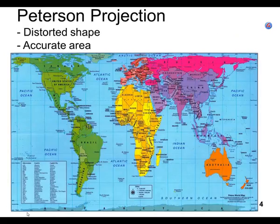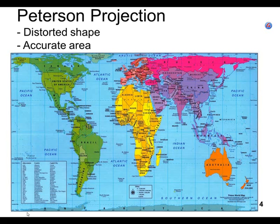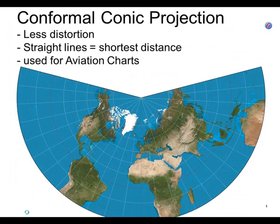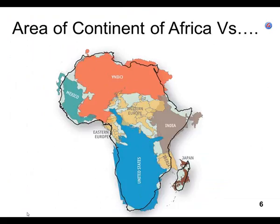Then I looked at the Peterson projection. The countries near the North Pole and near the South Pole are distorted, but the size — the area — is correct. So if you look at Greenland versus Africa, Africa is four, five, six times bigger. But I still had a misconception about how big Africa was until I saw this.